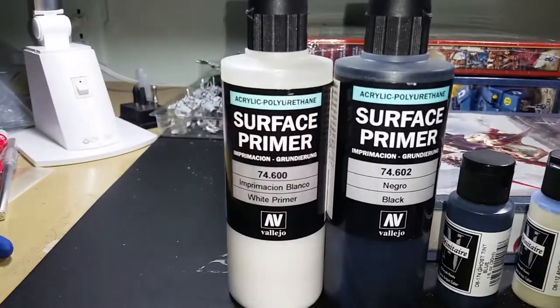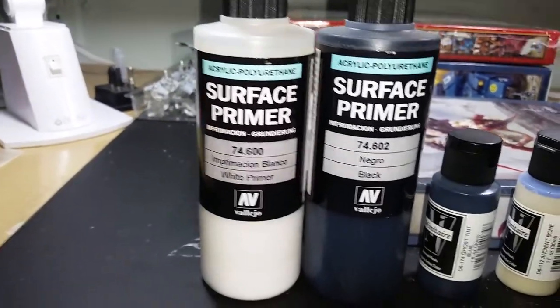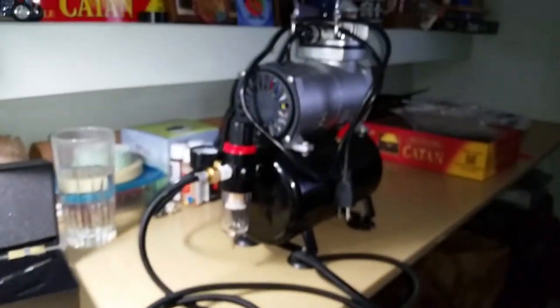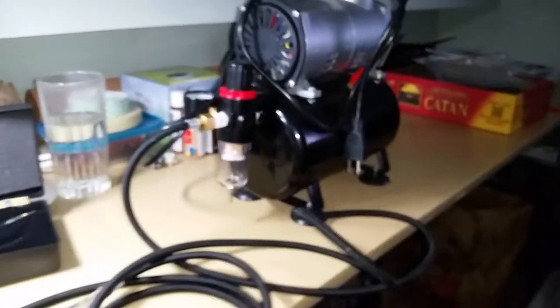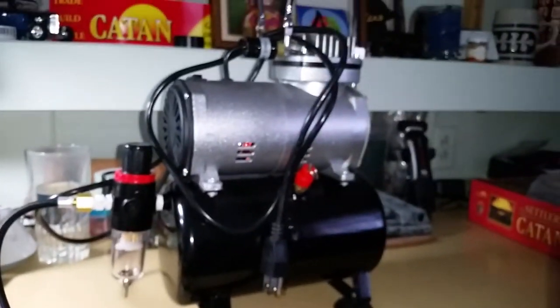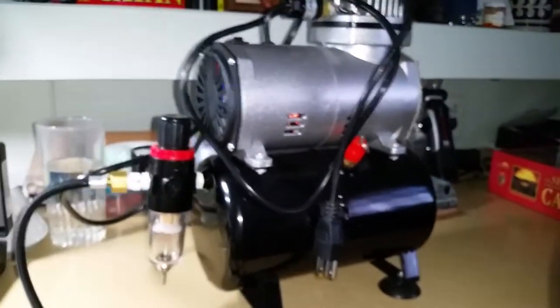And here are the primers I'll be using. These are Vallejo. Over here is my air compressor. You can buy this at Amazon. It's pretty cheap and cheaply made.